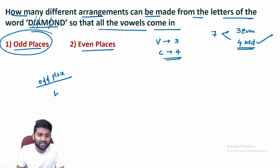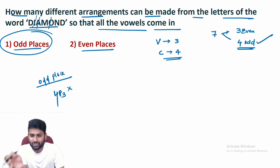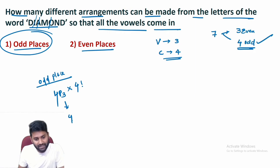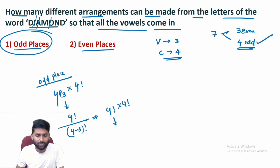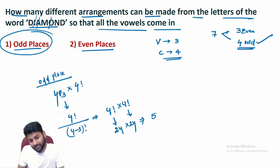Since we have four odd places but only three vowels, arrangement is 4P3. We fill three positions, and one odd position is left. That leftover position joins the three even places, making four positions for consonants. So four consonants arranged in four places = 4!. Thus total = 4P3 × 4! = (4!/1!) × 4! = 24 × 24 = 576.